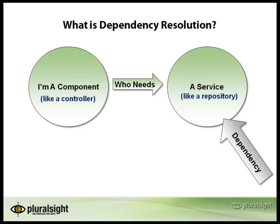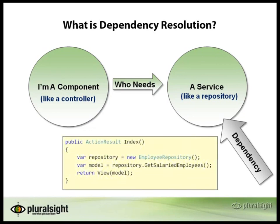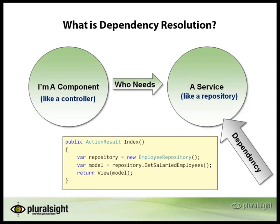It needs to obtain a reference to that dependency somehow. One way to obtain that dependency would be to directly instantiate it in code — I can say new EmployeeRepository. But there are a few drawbacks to this approach because now I've tightly coupled my component to that particular service. This might not be a problem in every piece of code, but if you're trying to build an extensible framework that can substitute different services at runtime, or if you're trying to unit test this controller action, then you want the ability to substitute different services for that employee repository. One might talk to the database — that's fine for production — one might just talk to an in-memory collection, and that's going to be great for unit testing. We need some more flexibility and not just take a direct approach to instantiating our dependencies.